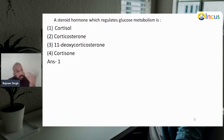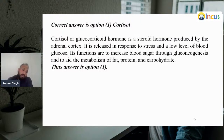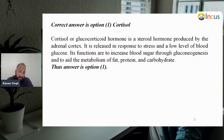Next: which steroid hormone regulates glucose metabolism? Cortisol, corticosterone, 11-deoxycorticosterone, or cortisone? Answer: cortisol. Cortisol is a glucocorticoid hormone and steroid hormone produced by the adrenal cortex. It is released in response to stress and low blood glucose levels. Its functions include increasing blood sugar through gluconeogenesis and aiding in the metabolism of fat, protein, and carbohydrates. That is why our answer will be cortisol.